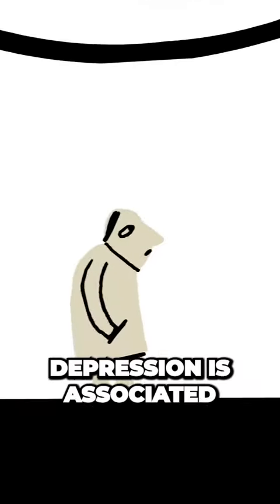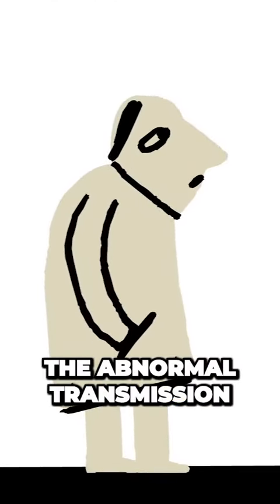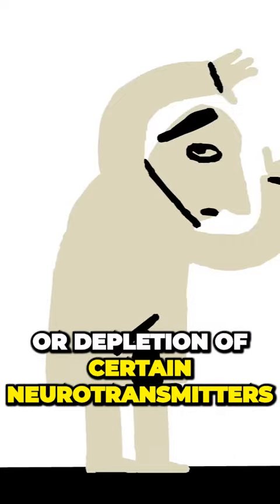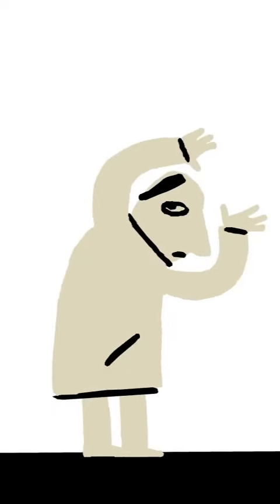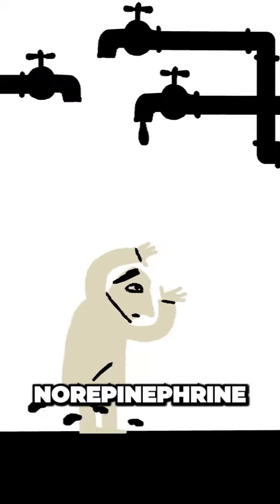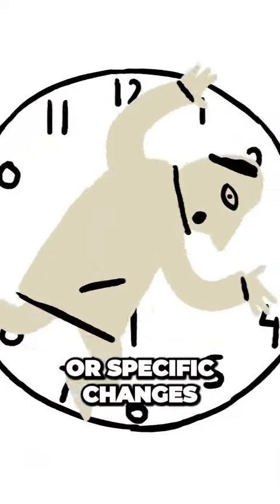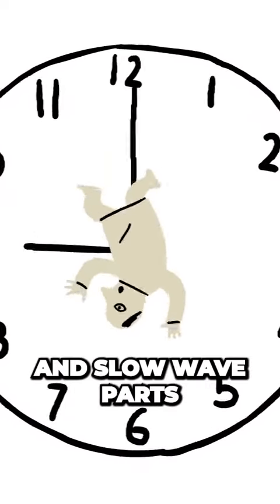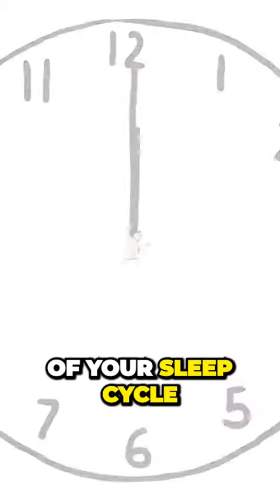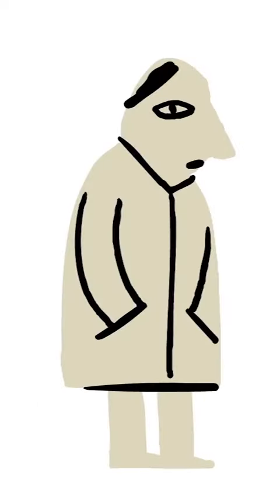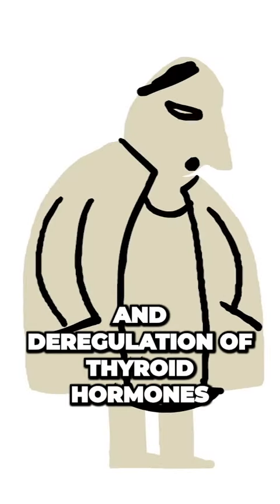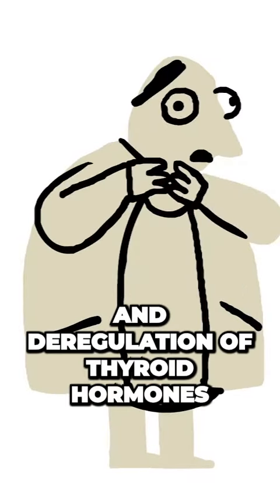On a more micro scale, depression is associated with a few things: the abnormal transmission or depletion of certain neurotransmitters, especially serotonin, norepinephrine, and dopamine, blunted circadian rhythms, or specific changes in the REM and slow-wave parts of your sleep cycle, and hormone abnormalities, such as high cortisol and deregulation of thyroid hormones.